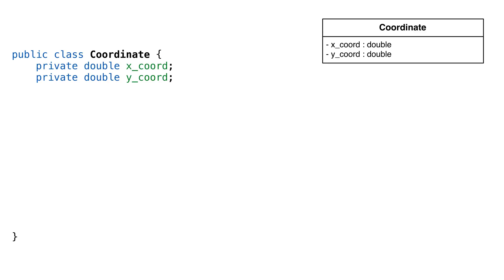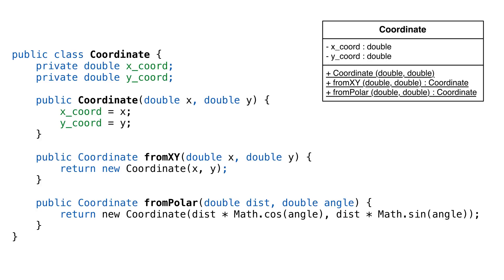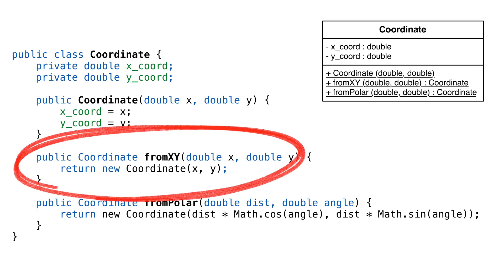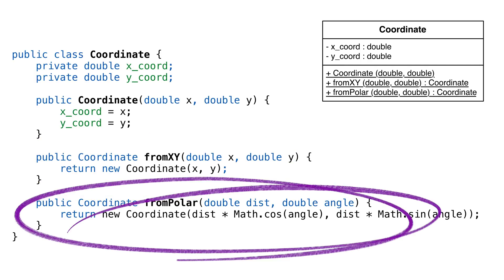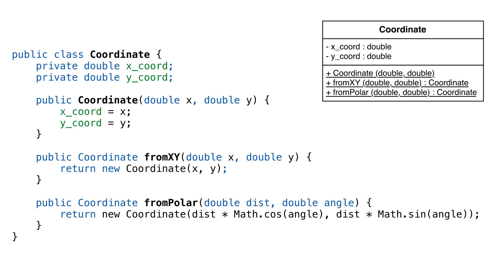So, how do we create our coordinate instances? Since we can't have two constructors with the same parameter lists, we'll create two methods. One is called from x, y, and the other from polar. Both take two doubles and return a coordinate instance.